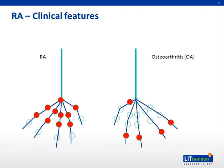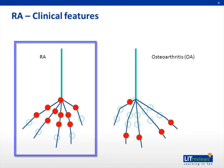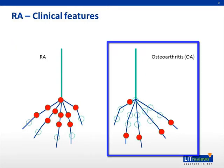The joint involvement also, in general, differs between rheumatoid arthritis and osteoarthritis, and the pattern of involvement can help differentiate the two. As mentioned, RA typically involves the proximal joints, such as the wrists, the MCPs, and the PIPs. Osteoarthritis, on the other hand, initially affects the distal interphalangeal joints, with the main proximal joint involved being the carpometacarpal, or CMC joint, near the thumb.